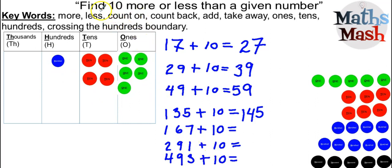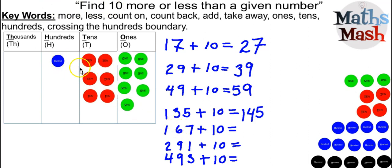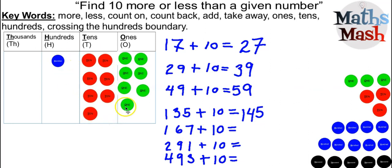Let's move on to 167 plus 10. With this question, I've got 167 — 100, 60, and 7 ones, 6 sets of 10, and 1 set of 100. I want to find out what is 10 more than 167. As we've done before, we just drag over another set of 10 and count up the counters in the different columns. The ones column hasn't changed, so that stays as a 7. The tens column has changed, so we count: 10, 20, 30, 40, 50, 60, 70 — 7 sets of 10 is 70. And the hundreds column is unchanged, so that stays as 177.